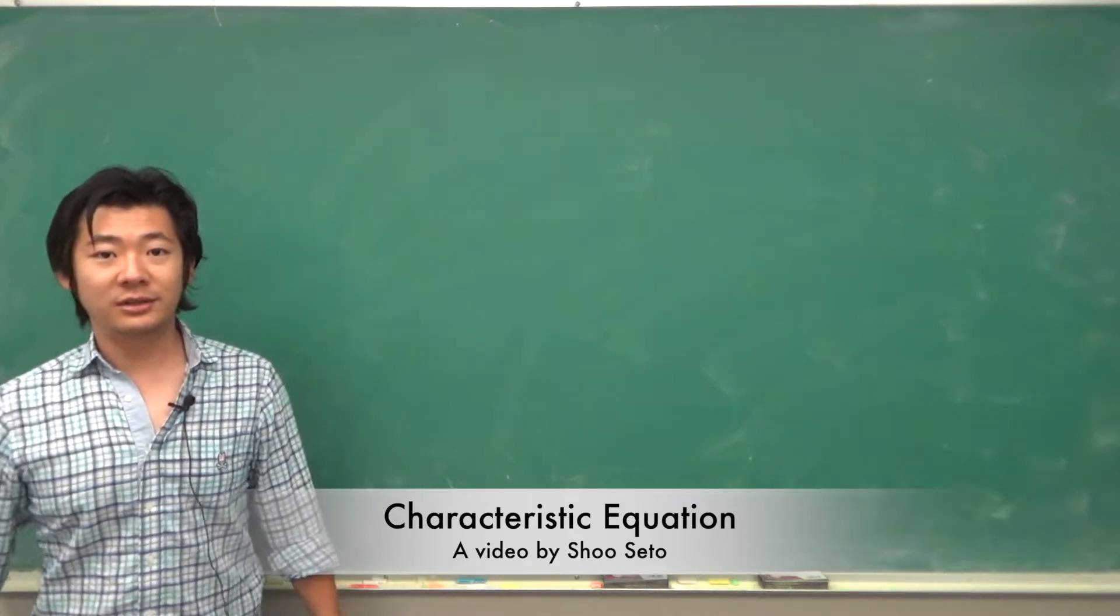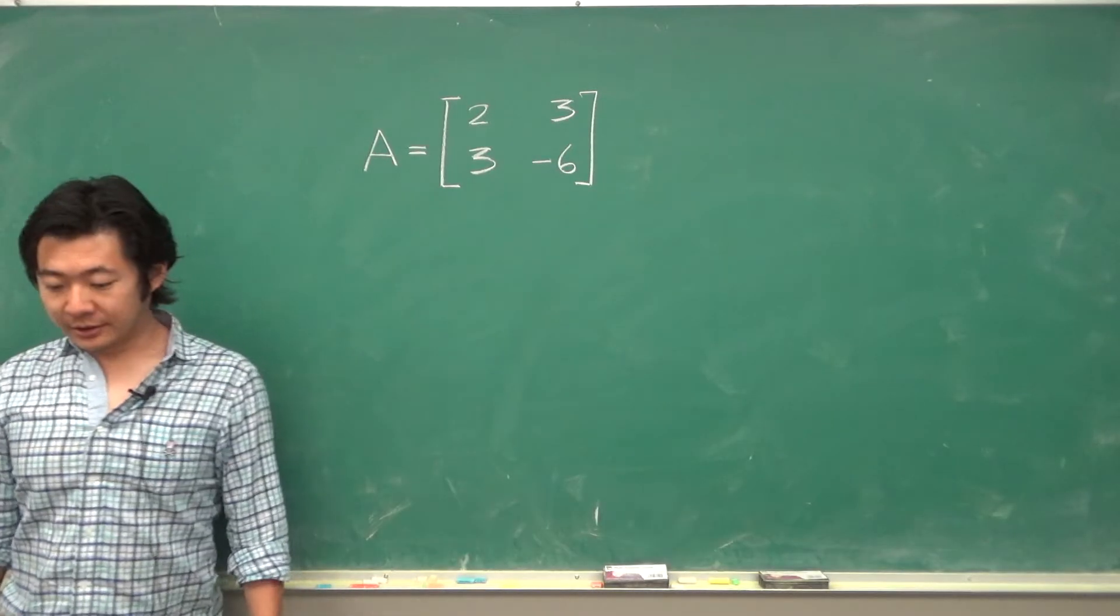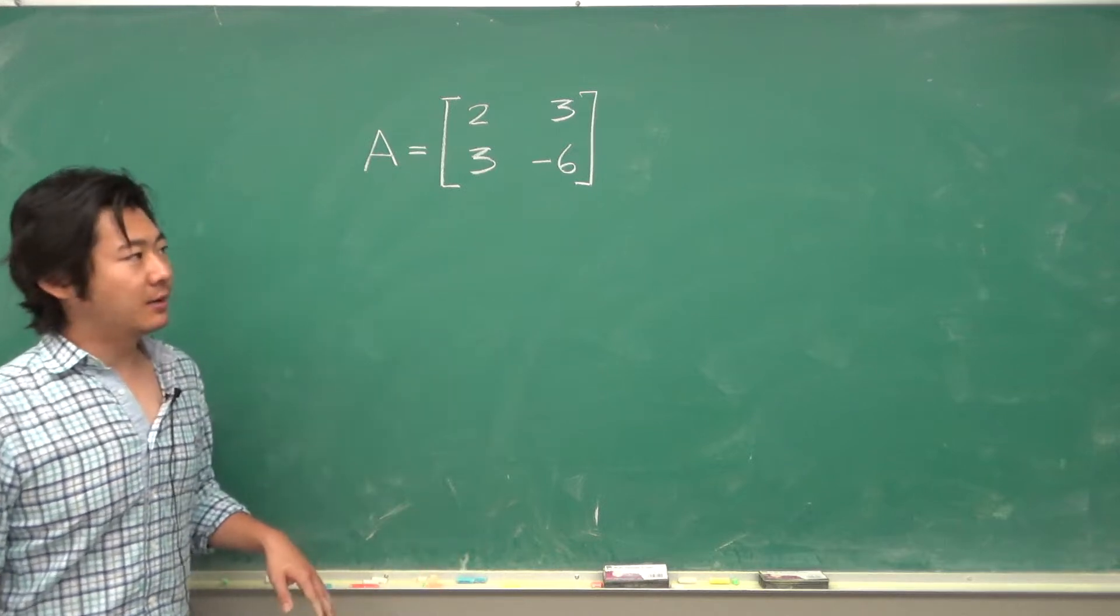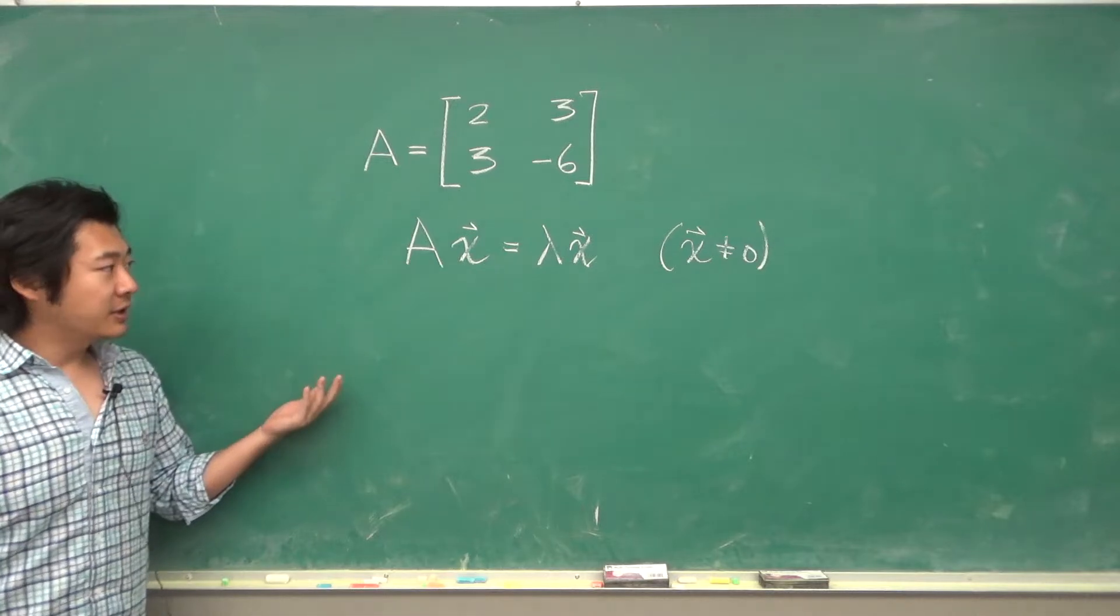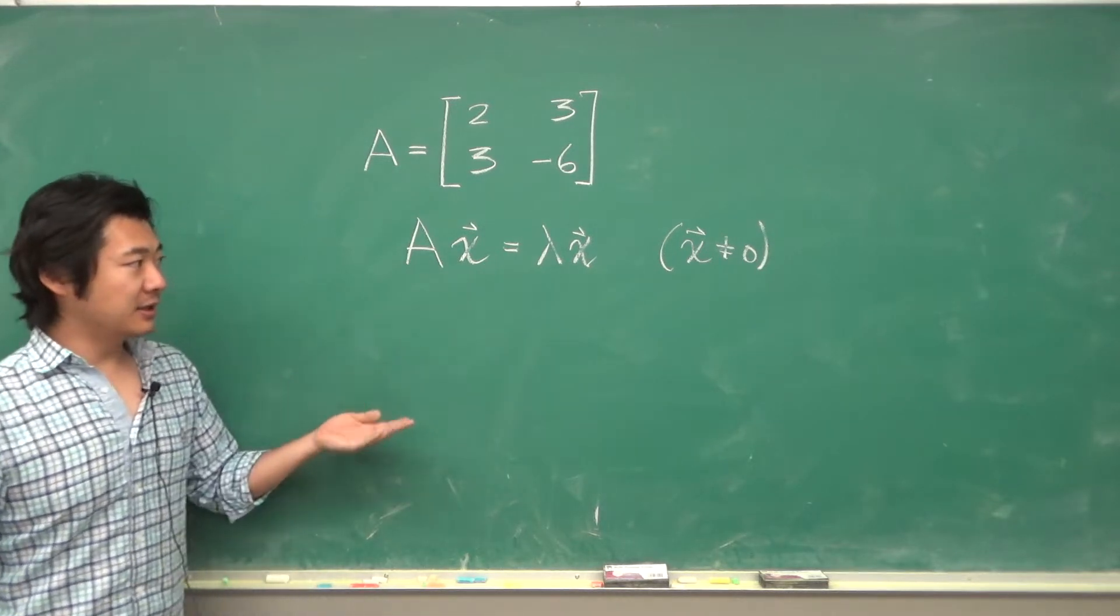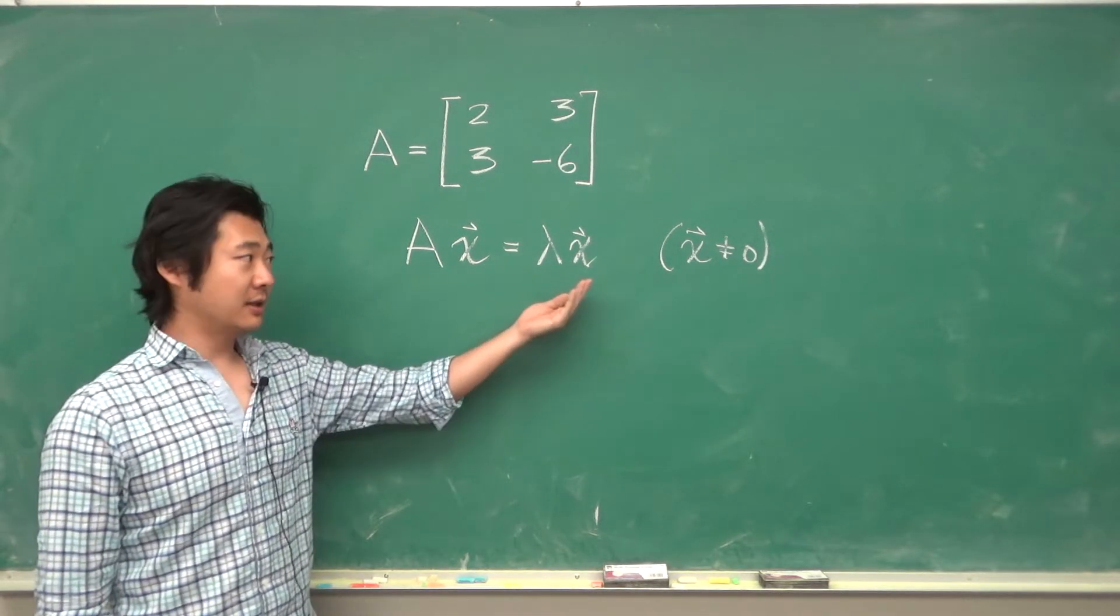In this video we will talk about characteristic equations. So first let's consider the eigenvalue problem for this matrix A. We want to find non-zero x's such that A times the vector x is equal to some scalar lambda times x.